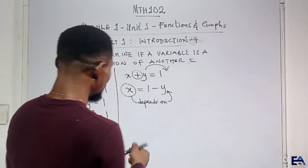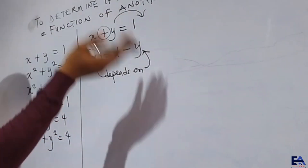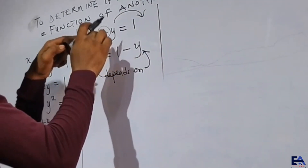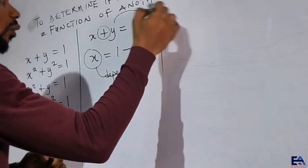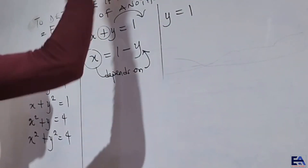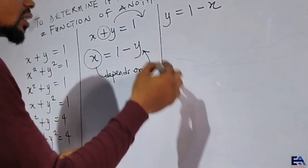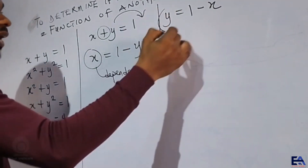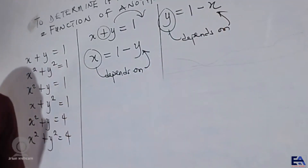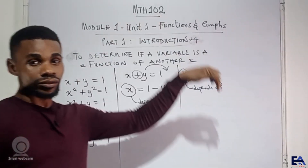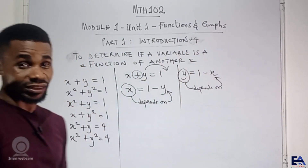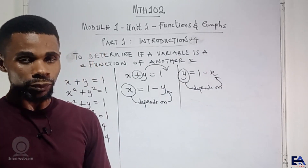Let me give you an example. If I want to do this one the other way around: x plus y equals 1, I can decide to send x to the other side instead of y. So if I want y to stay, it should be y is equal to 1. Y alone remaining positive, then this positive x going to the other side becomes minus x. So in this case, it means y depends on x. Any one I decide to send to the other side becomes the independent variable, and its value will determine the value of the dependent variable on the left-hand side.